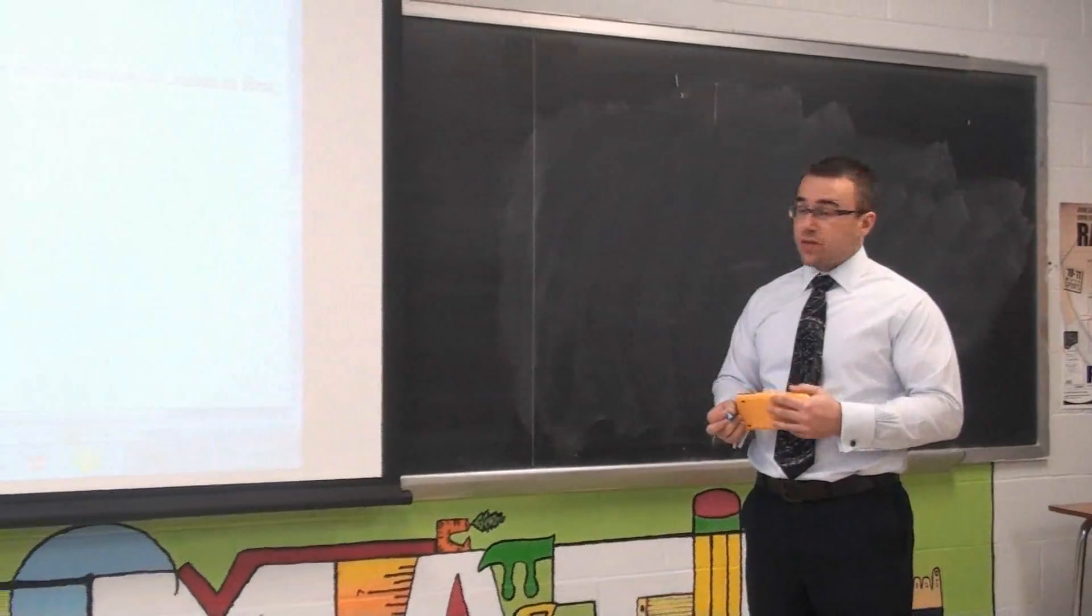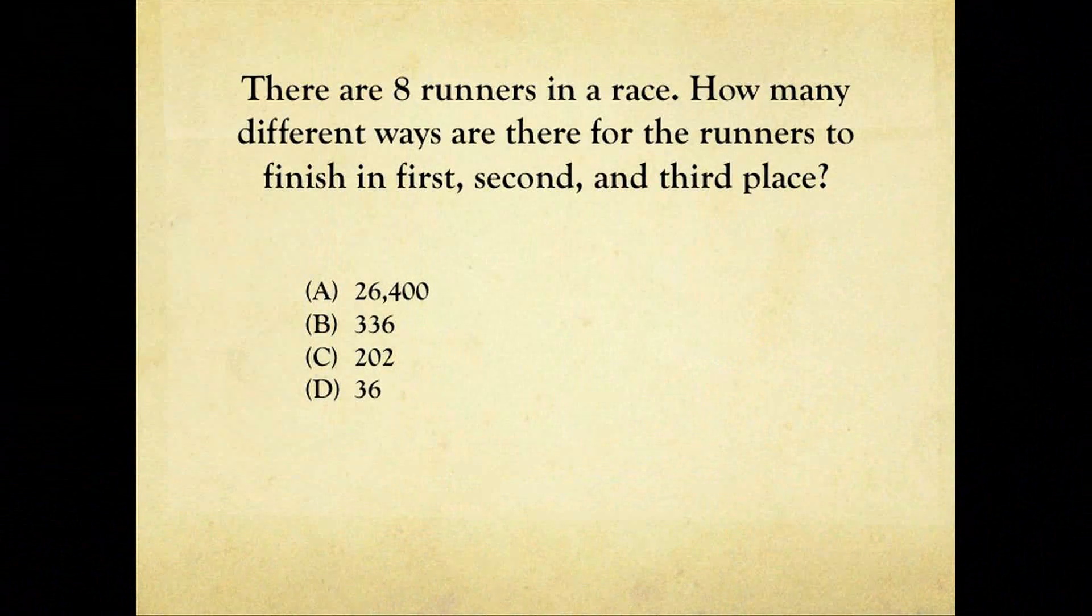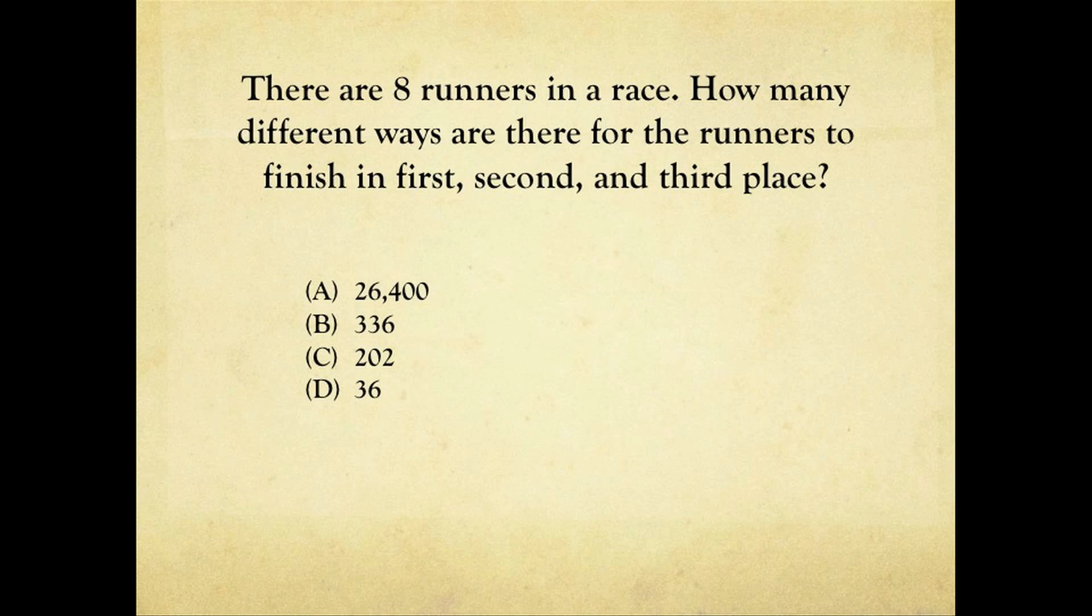This one would be considered a multiple choice question. There are eight runners in a race. How many different ways are there for the runners to finish in first, second, and third place? And they give us their four choices.